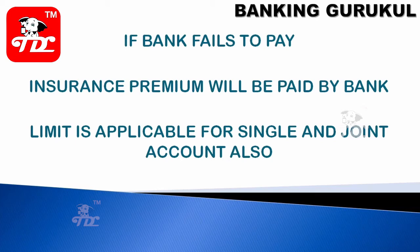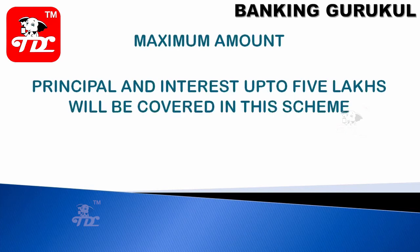At present, the coverage limit is 5 lakhs. This limit is applicable for both single and joint accounts, with a maximum of 5 lakhs. If a customer has multiple accounts in the same bank — savings, current, FD, RD — including any interest on deposits, the maximum insured amount is 5 lakhs.